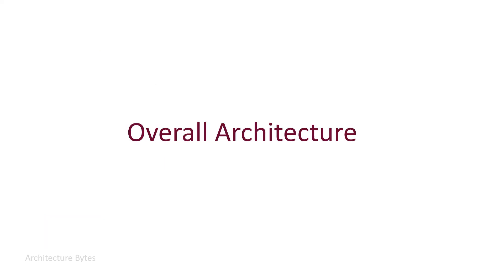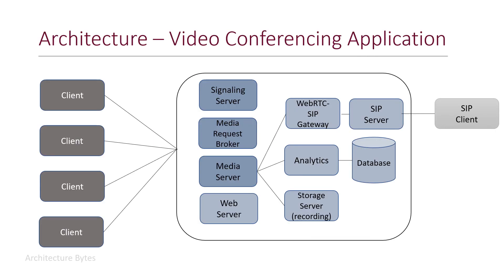Let's see what our overall architecture looks like. We have a web server which can host web pages for clients to download and display a UI. If you want to interface with a SIP client, you can do that via a WebRTC-SIP gateway and a SIP server. The media server can also send data to an analytics engine, which may use a database to store information. To record meetings, the media server can send a feed to a storage server — if you are using AWS cloud, storage could be S3. This is what the overall architecture of a video conferencing application may look like.